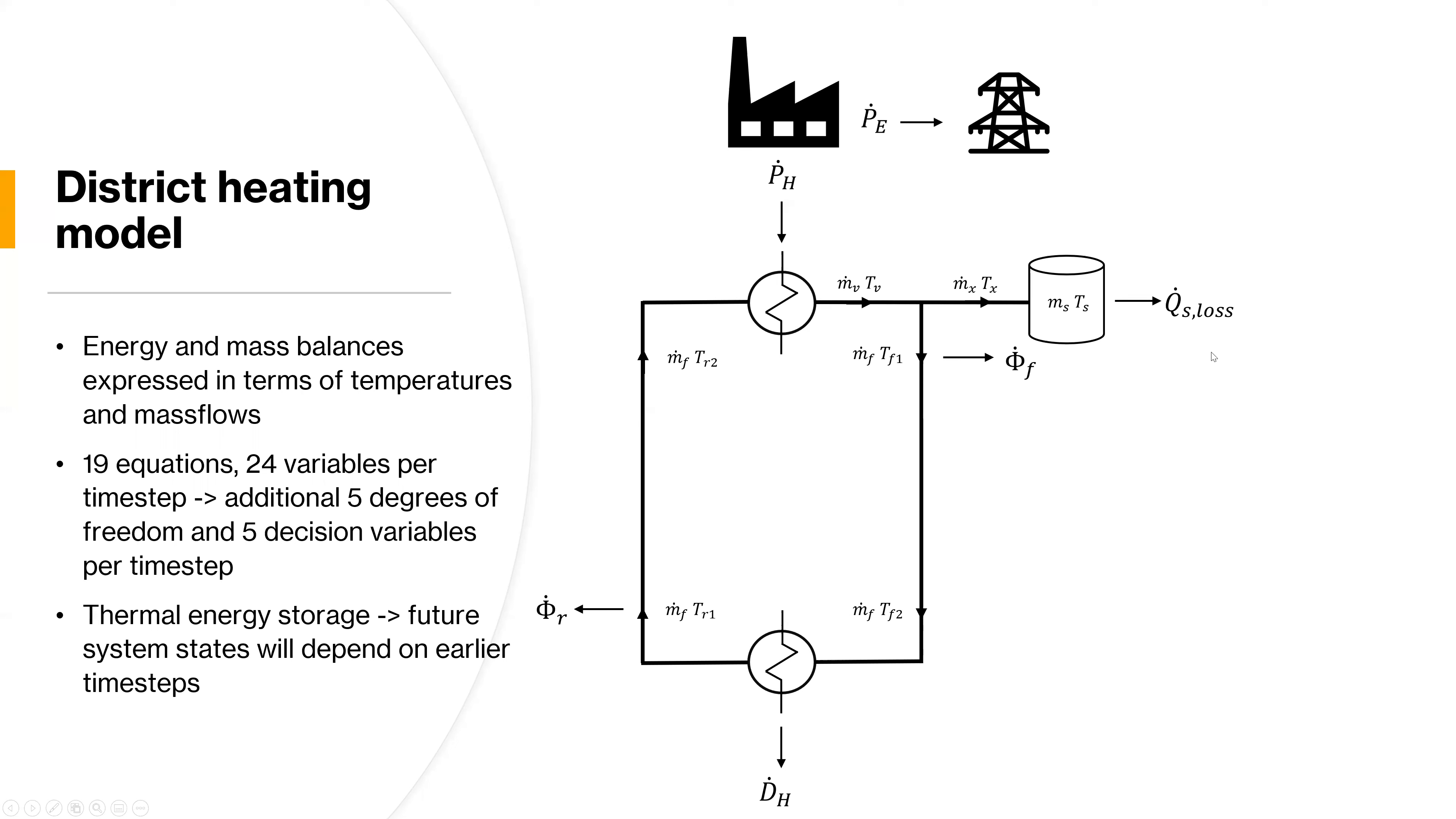And it has a thermal storage, as you can see over here where the energy contained is defined also in terms of mass and temperature. Then we have included different heat losses in the system, we have a storage heat loss, a forward transmission heat loss and a return transmission heat loss. Then we have the demand node down here, which is basically an aggregated node for all the distribution network. We end up with 19 equations, 24 variables per time step, which gives us five decisions in total, or five additional decision variables per time step that we are implementing this model.